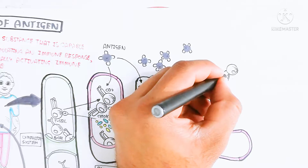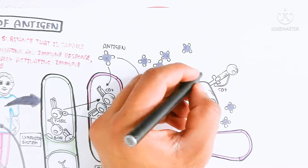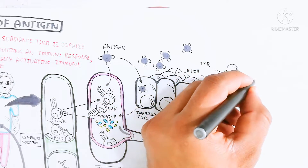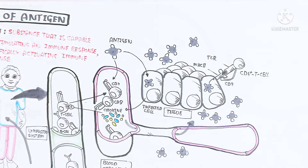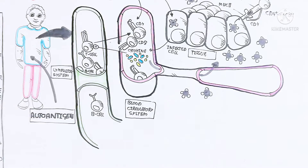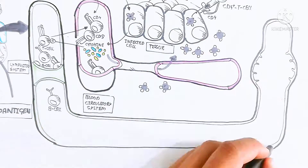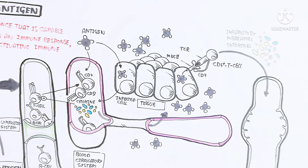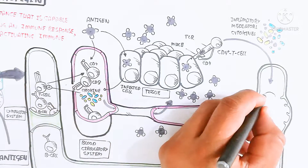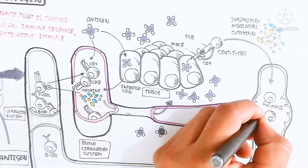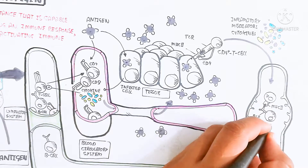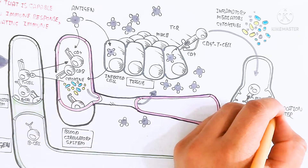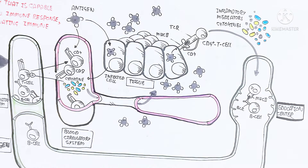The T helper cell (CD4) binds with the MHC class 2 molecule — major histocompatibility complex class 2 — which presents the antigen and is recognized by the T cell receptor. After recognition, it produces inflammatory mediators and cytokines such as interleukins, which recruit B cells. It also goes into the lymphatic system for further proliferation and recognition through MHC class 2 molecules, and produces inflammatory mediators for further recruitment.